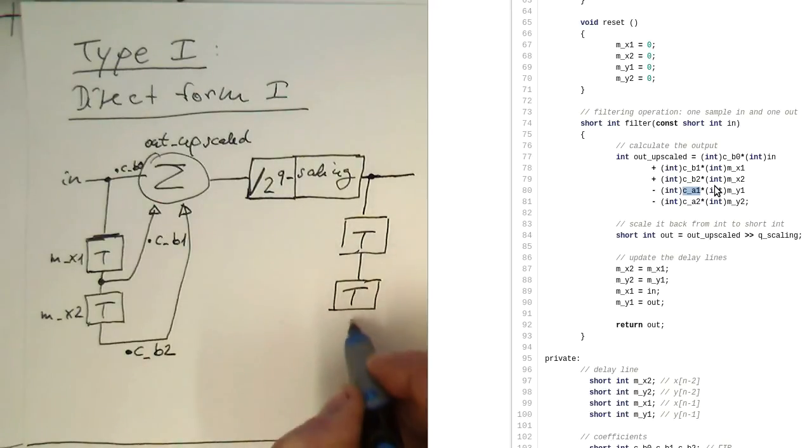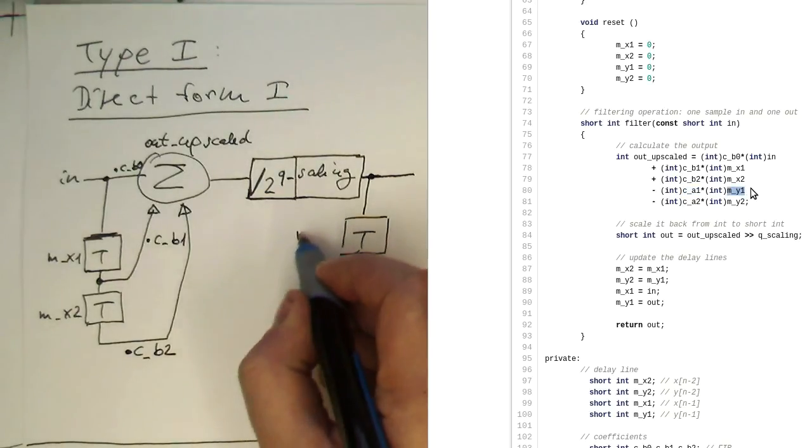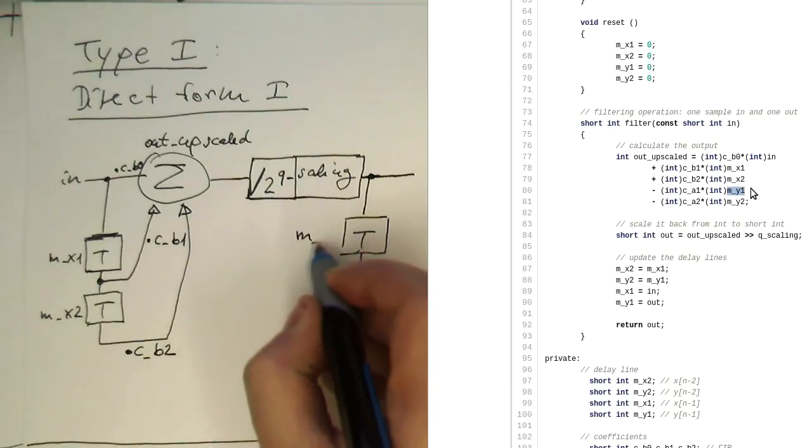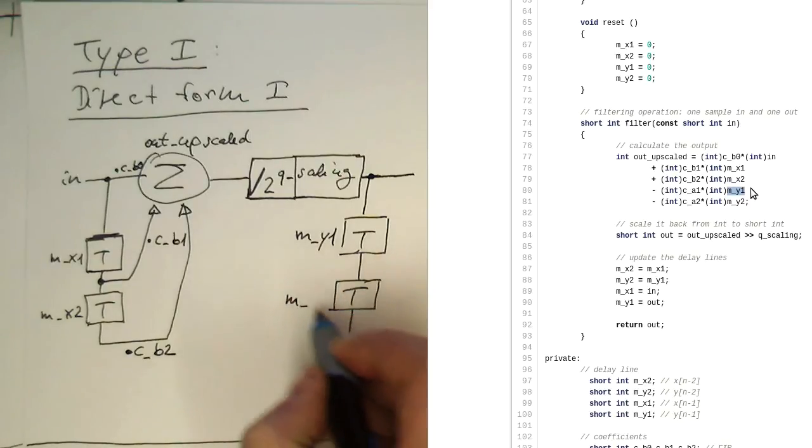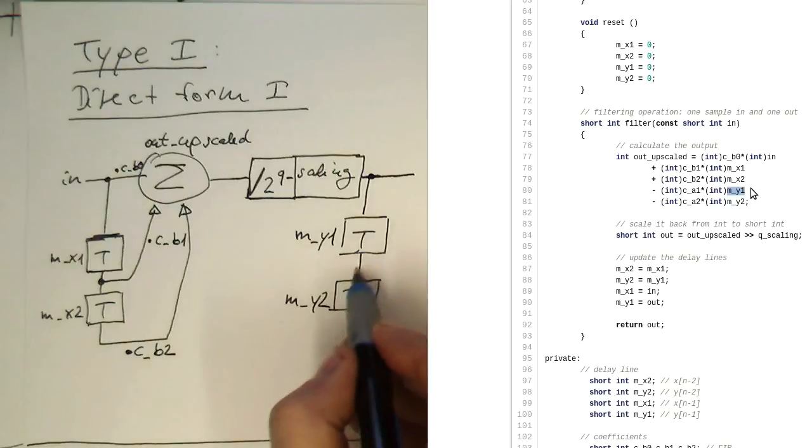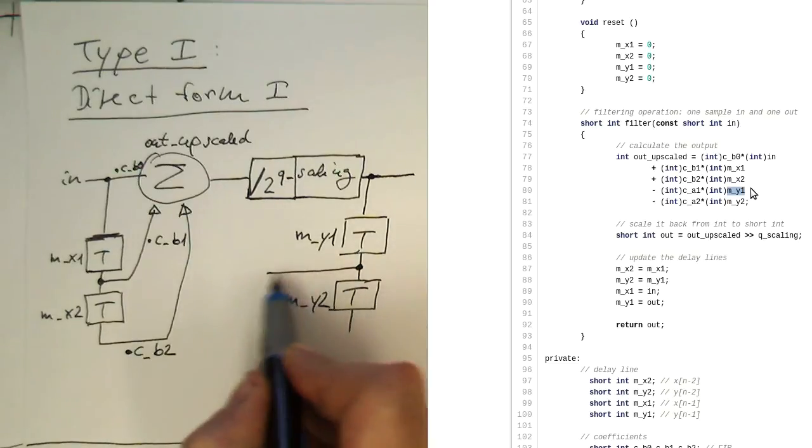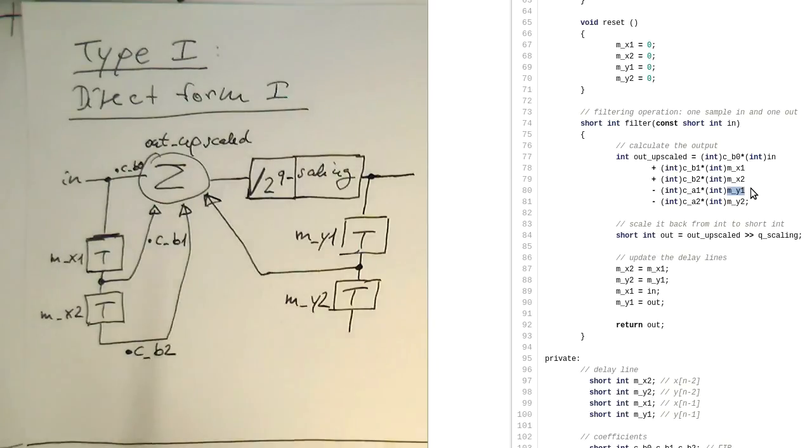So again, delay steps here. We've got this delay step at the output: this is M_Y1, and this is M_Y2. After this delay step, this is sent in here and multiplied with C_A1.